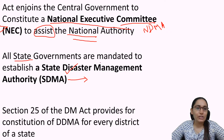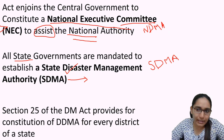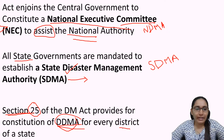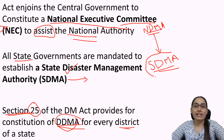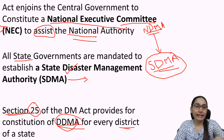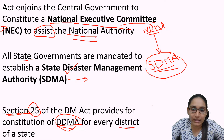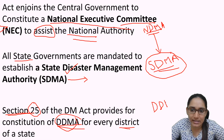The act also empowers the central government to constitute a National Executive Committee, the NEC, to assist the National Disaster Management Authority — the NDMA. Section 25 of the Disaster Management Act provides for the constitution of DDMA — the District Disaster Management Authority — for every district of a state. So at the apex level we have NDMA, at state level SDMA, and at district level DDMA.